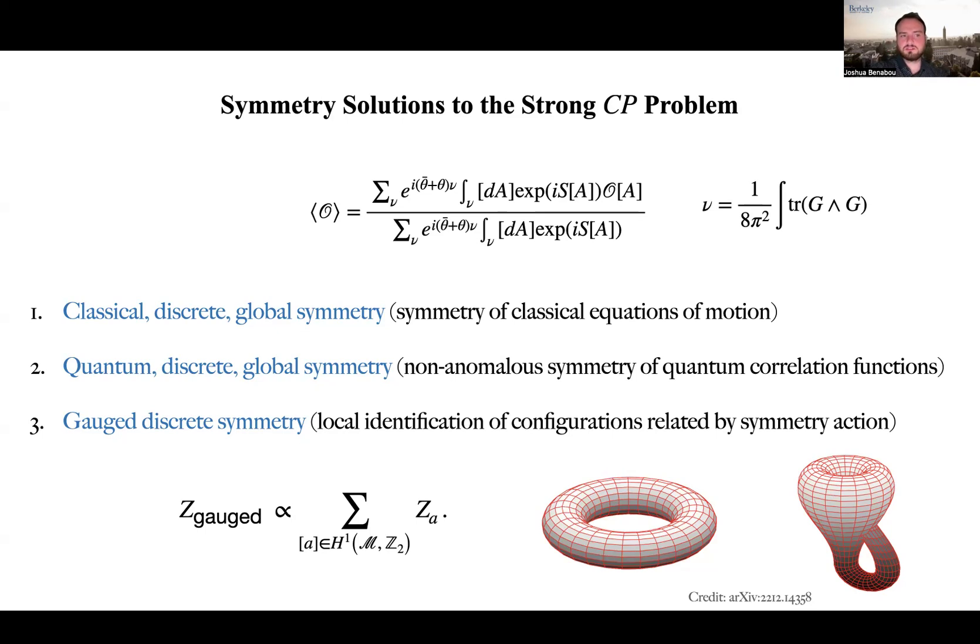Number one, a classical discrete global symmetry, meaning a symmetry of the classical equations of motion. If P or CP are imposed and are of this kind, that does not solve the strong CP problem, because theta bar GG dual is a total derivative.